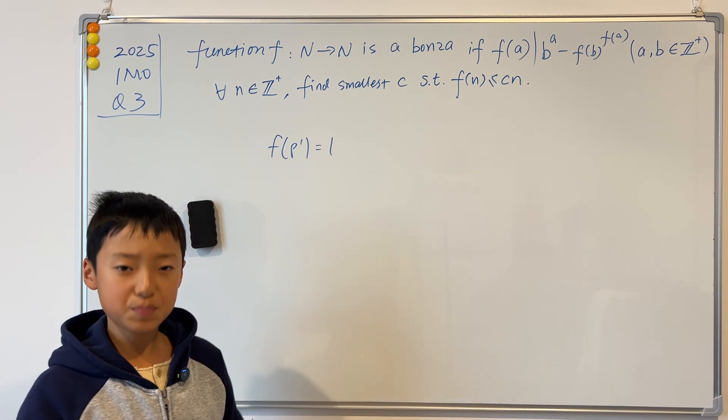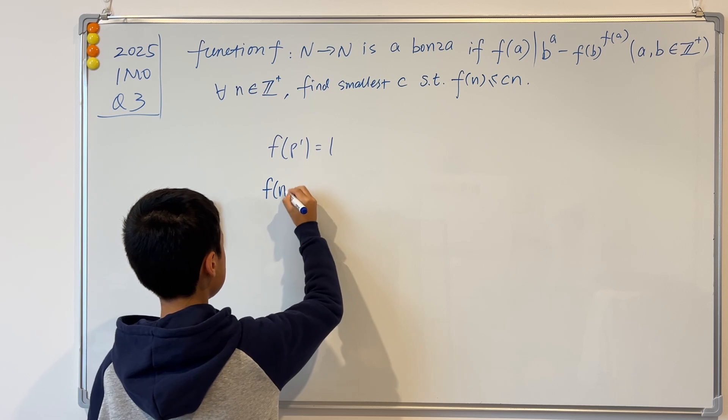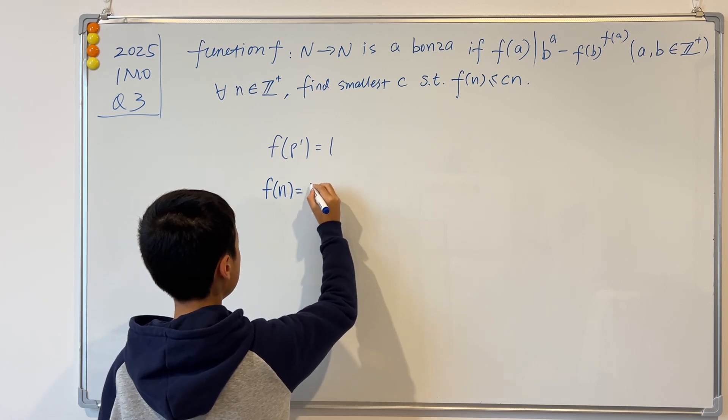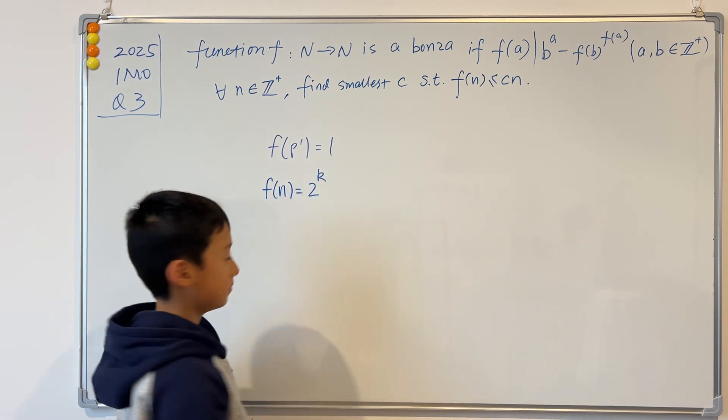This being said, we know that f(n) must be in the form 2^k.